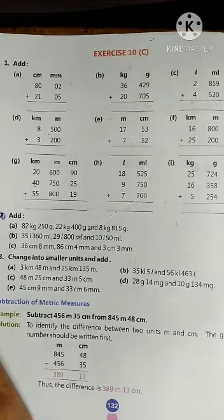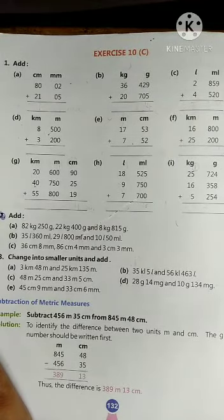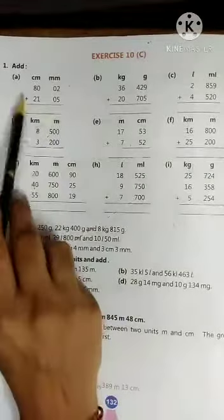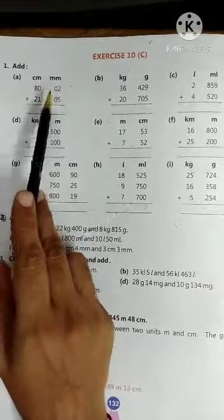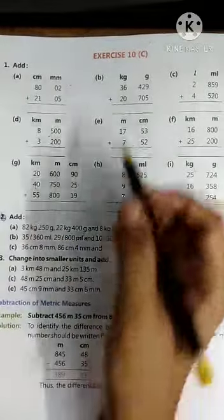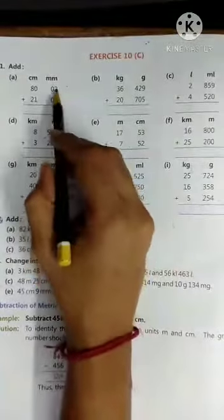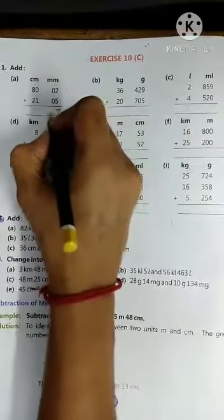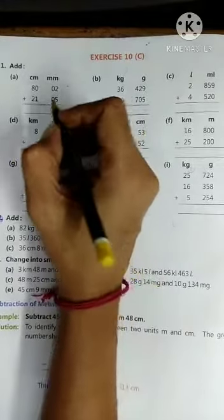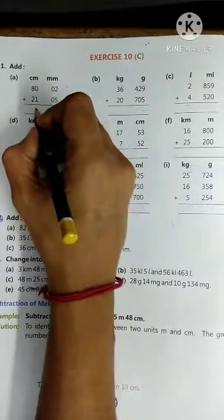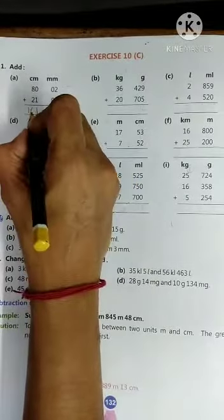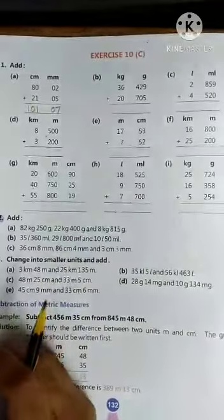So children, in this exercise, here you can see the addition sums. Different units are given to us and we have to add them. Let's begin with the A part. 2 plus 5 is 7, 0 plus 0 is 0, 0 plus 1 is 1, 8 plus 2 is 10. Clear everyone.